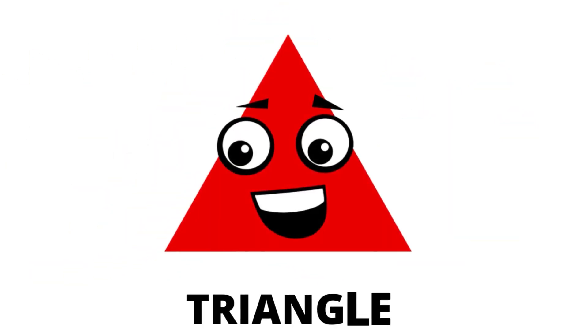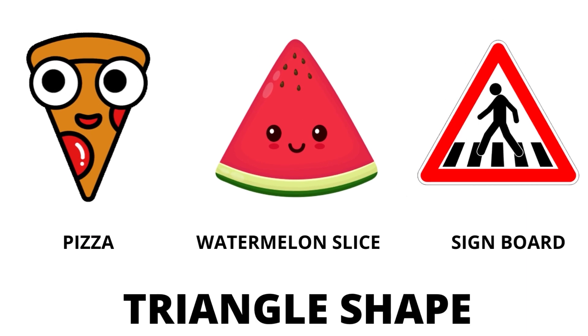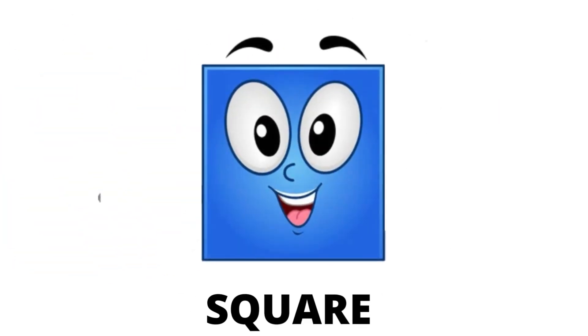It's a triangle. Triangle has three sides. The real life examples of triangle are pizza, watermelon slice, and signboard.